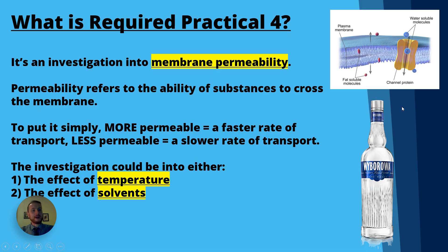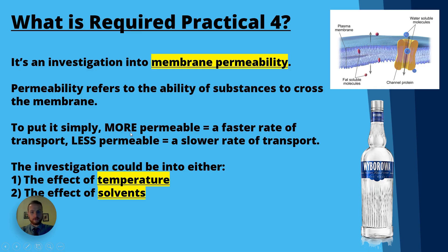You might wonder why there's a bottle of vodka on screen. That's because alcohol, or a solvent, can affect the rate of diffusion or transport across the membrane, because fats dissolve in alcohol. Permeability refers to the ability of substances to cross the membrane — more permeable means a faster rate of transport, less permeable means a slower rate.